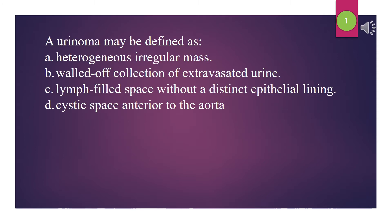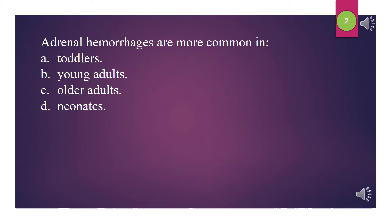A urinoma may be defined as: A. Heterogeneous irregular mass. B. Walled-off collection of extravasated urine. C. Lymph-filled space without a distinct epithelial lining. D. Cystic space anterior to the aorta. The answer is B: Walled-off collection of extravasated urine.